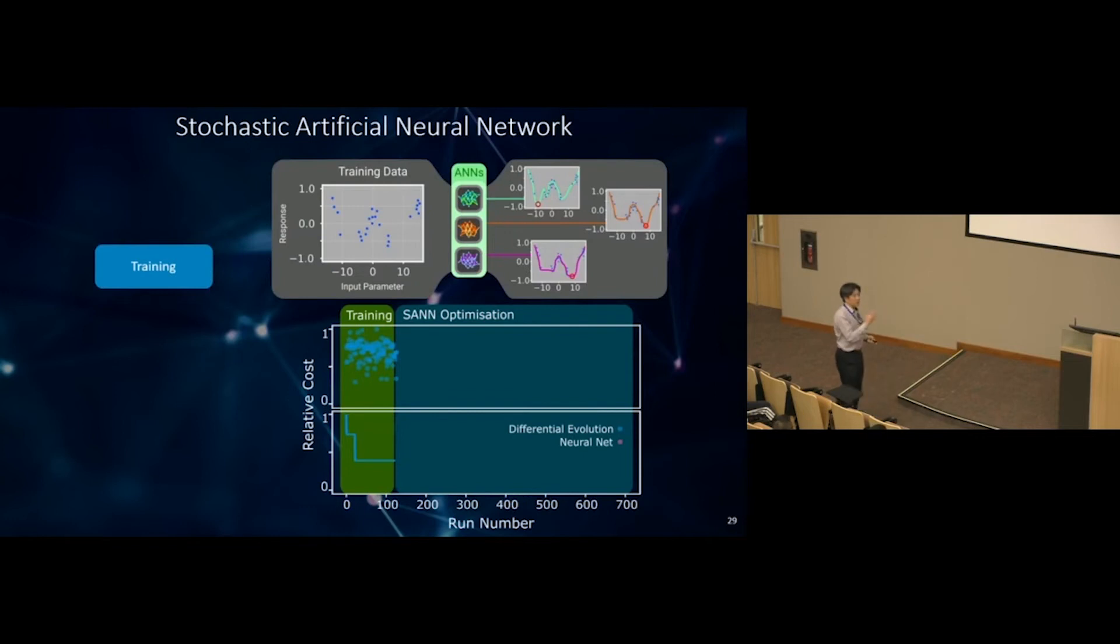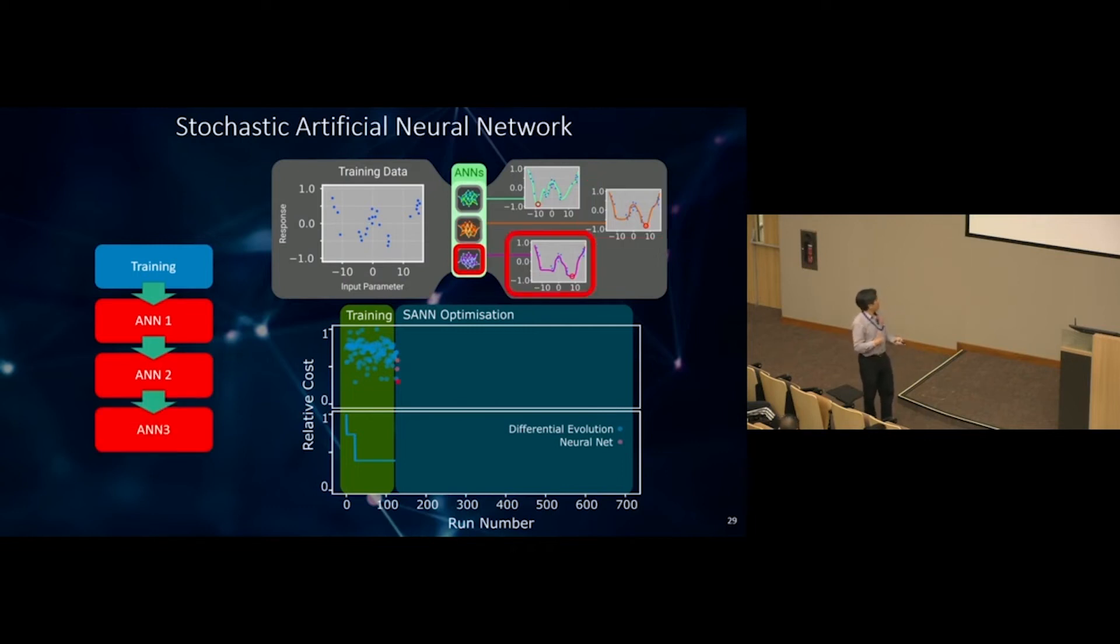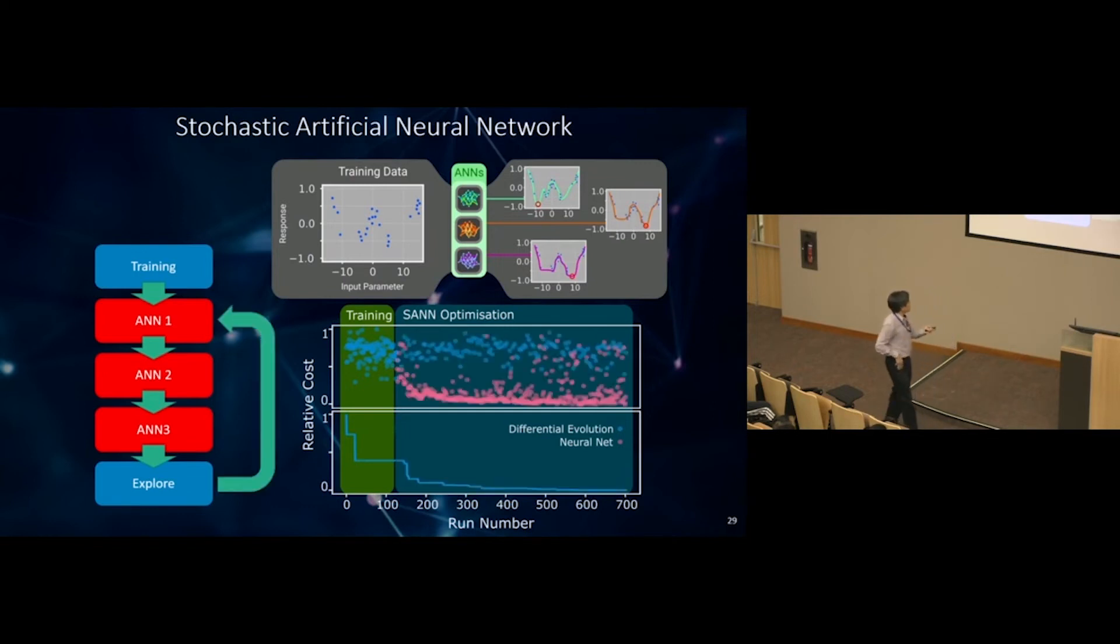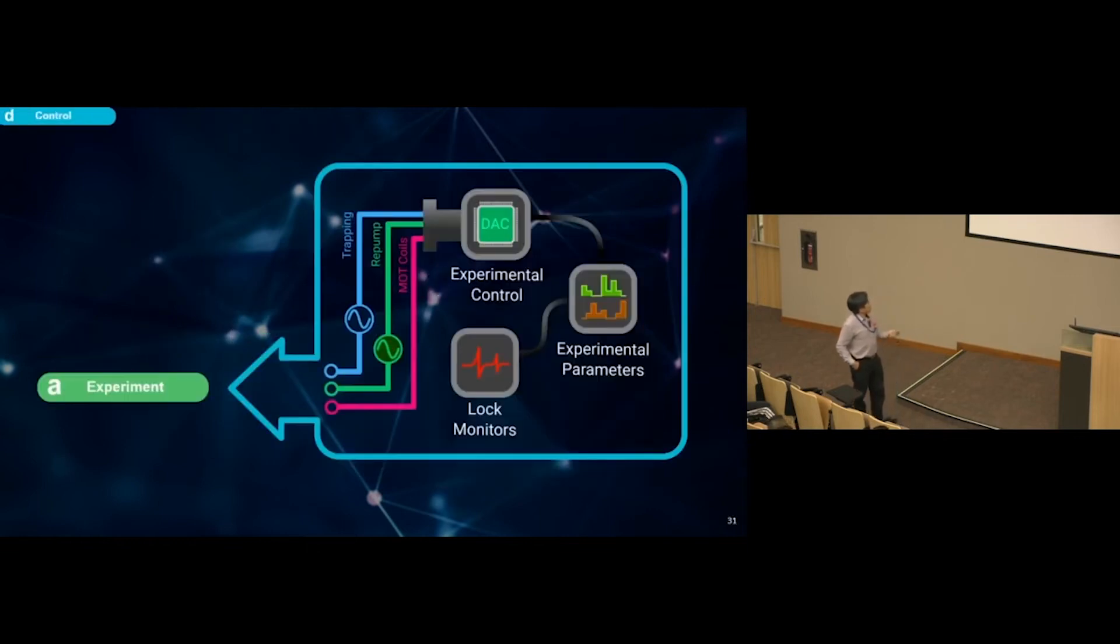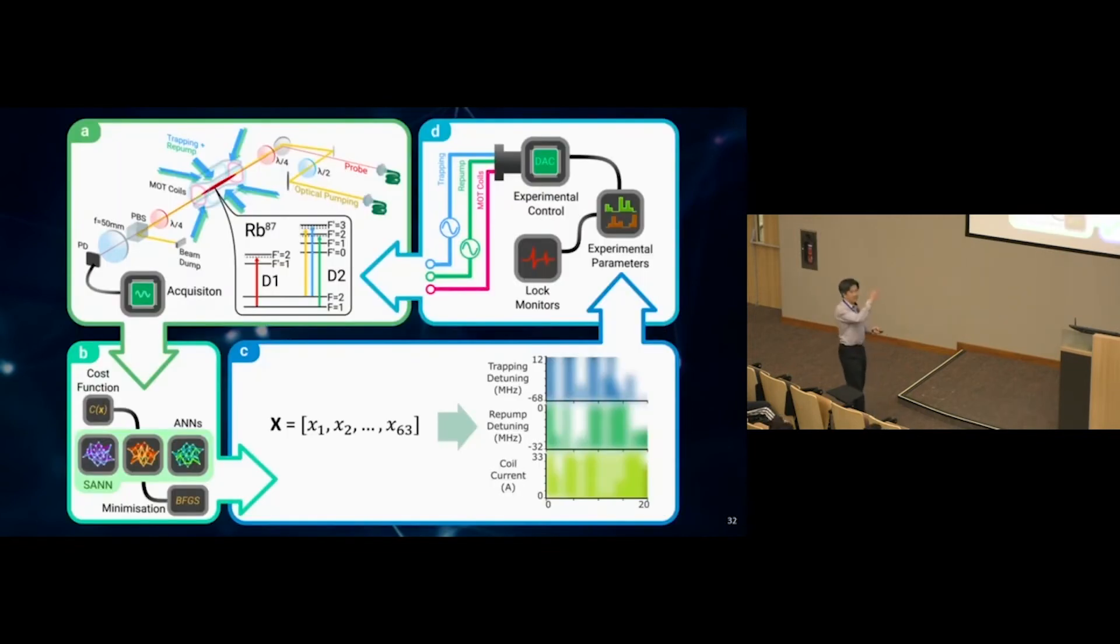Here's how it goes. We start with a set of training data, then ask the first artificial neural network what we need to do. It says go there. We went there and worked out the cost function. The second one says go there. We plot the second point. Then the third one. Just to be fair, let's explore somewhere. This is a 63 dimensional parameter space, difficult to get anything analytical out of this. We repeat the whole thing and hope to get the best set of 63 parameter settings for our experiment. We feed it back to the experiment and it goes on and on.